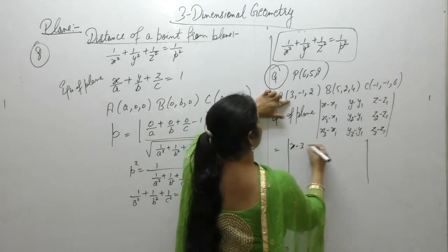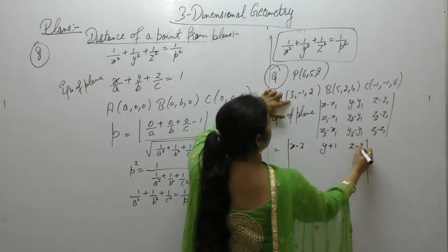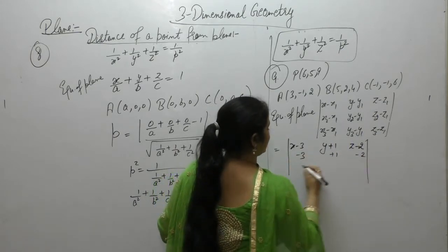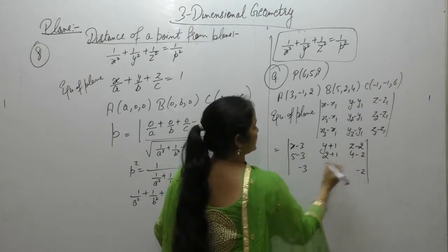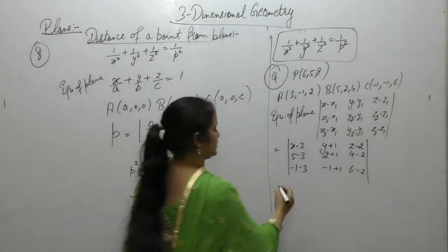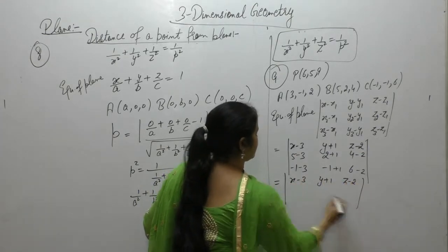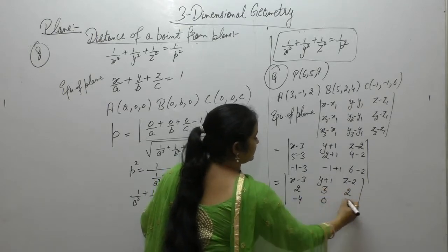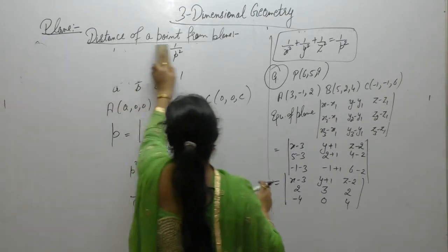So x1 is 3, y1 is minus 1, and z1 is 2. Computing the differences: x2 minus x1 is 5 minus 3, y2 minus y1 is 2 plus 1, z2 minus z1 is 4 minus 2. What we get is the determinant with rows (x minus 3, y plus 1, z minus 2), (2, 3, 2), and the third row from the third point. Now expand this equation and solve to find the equation of the plane.